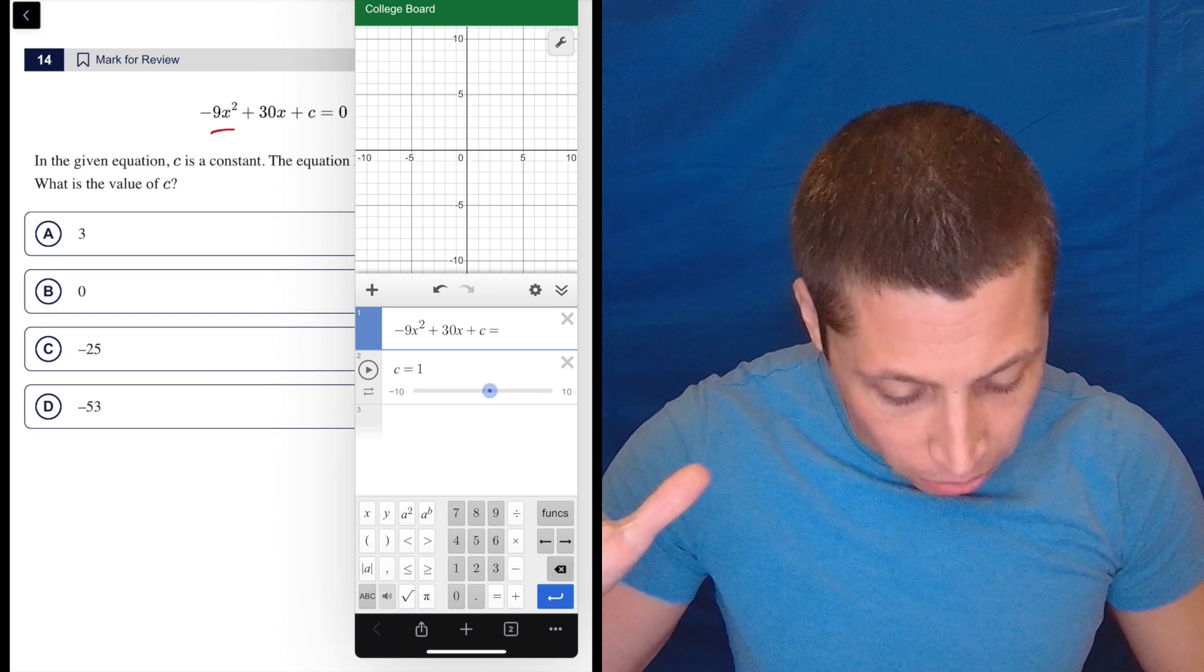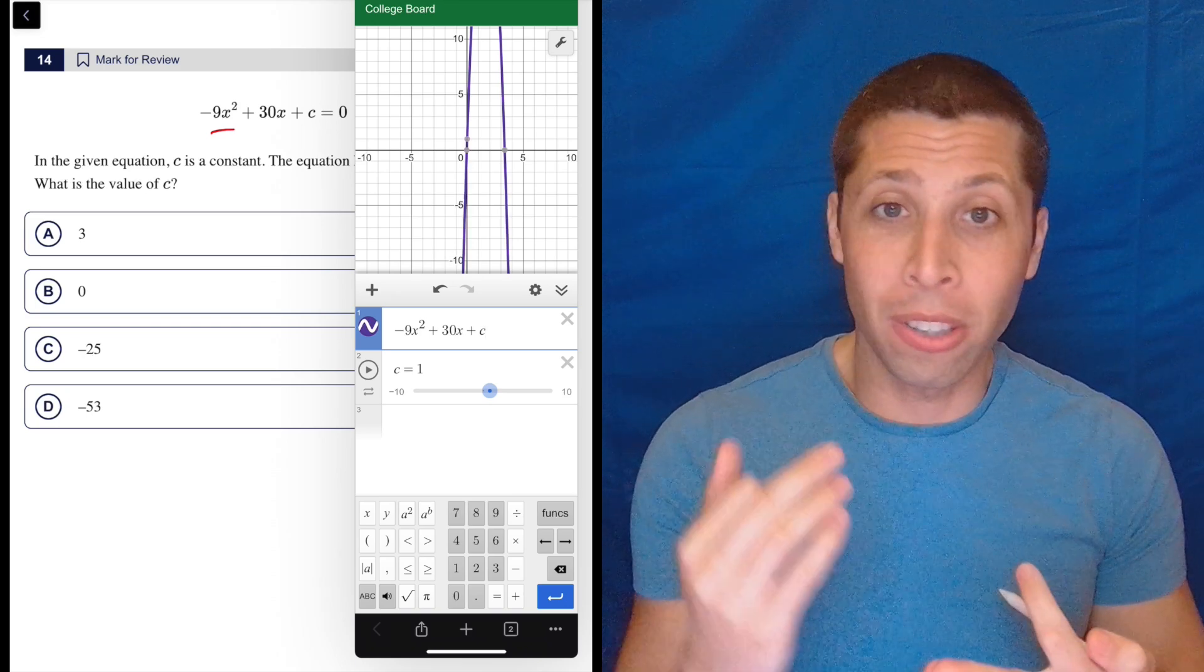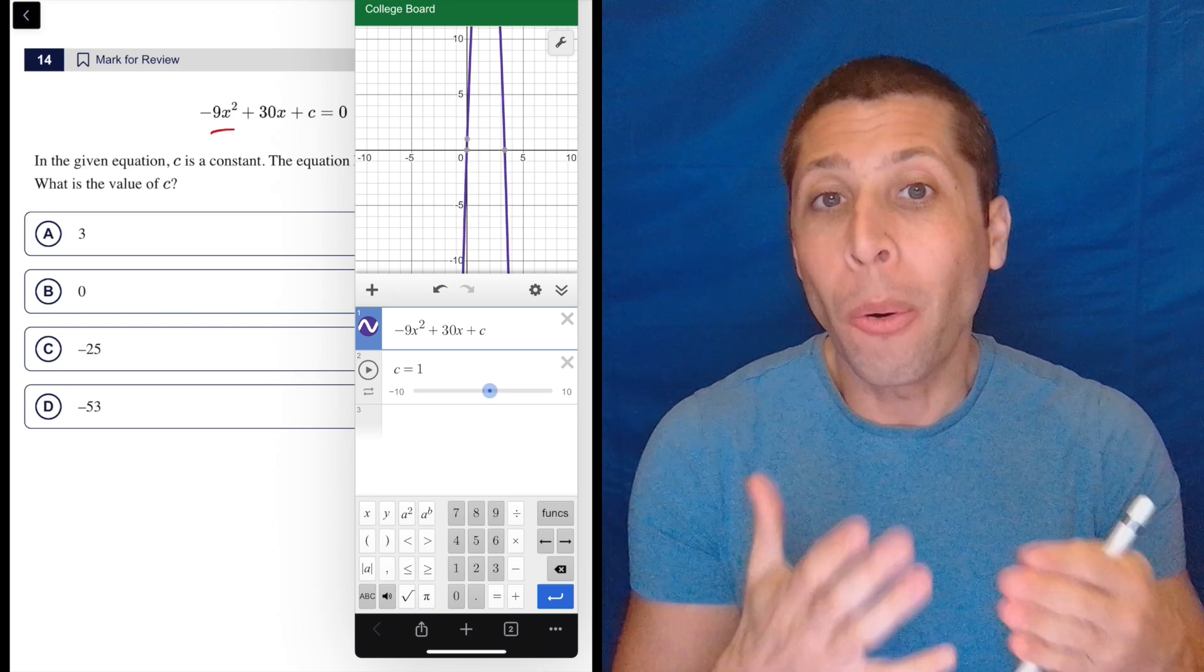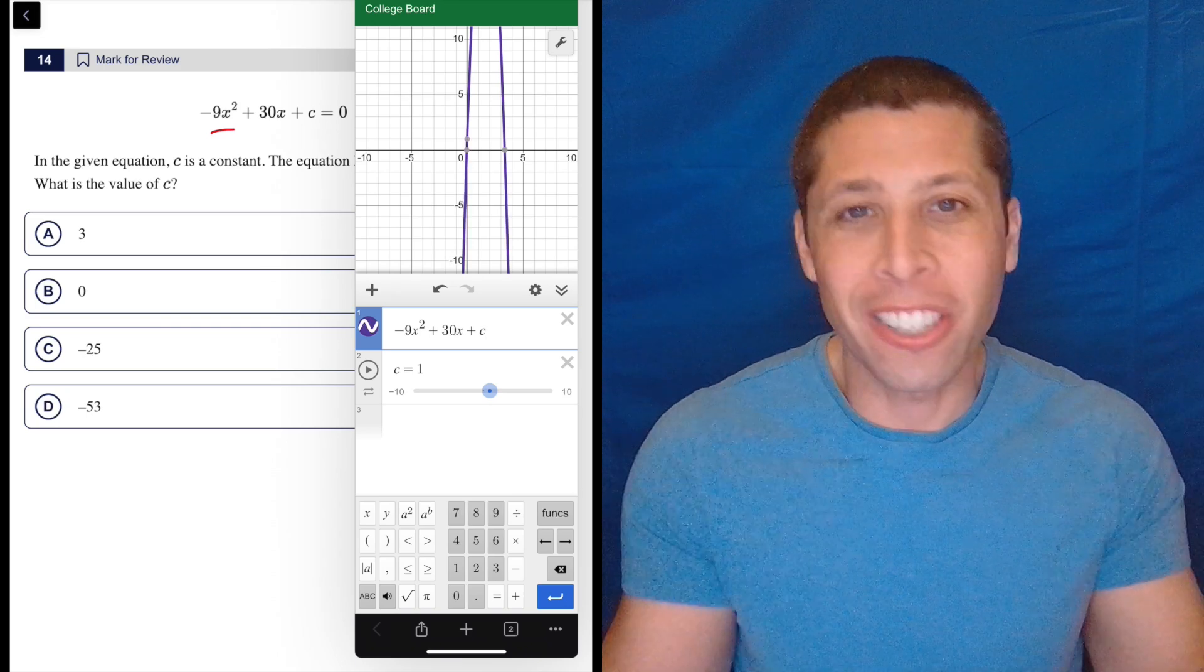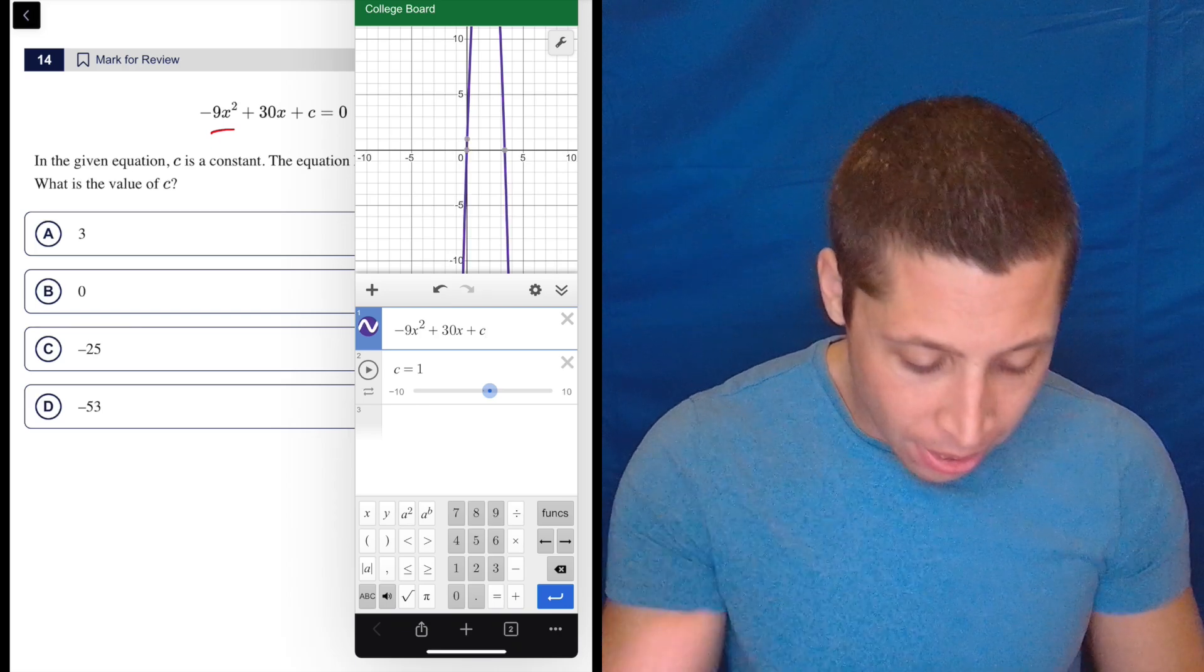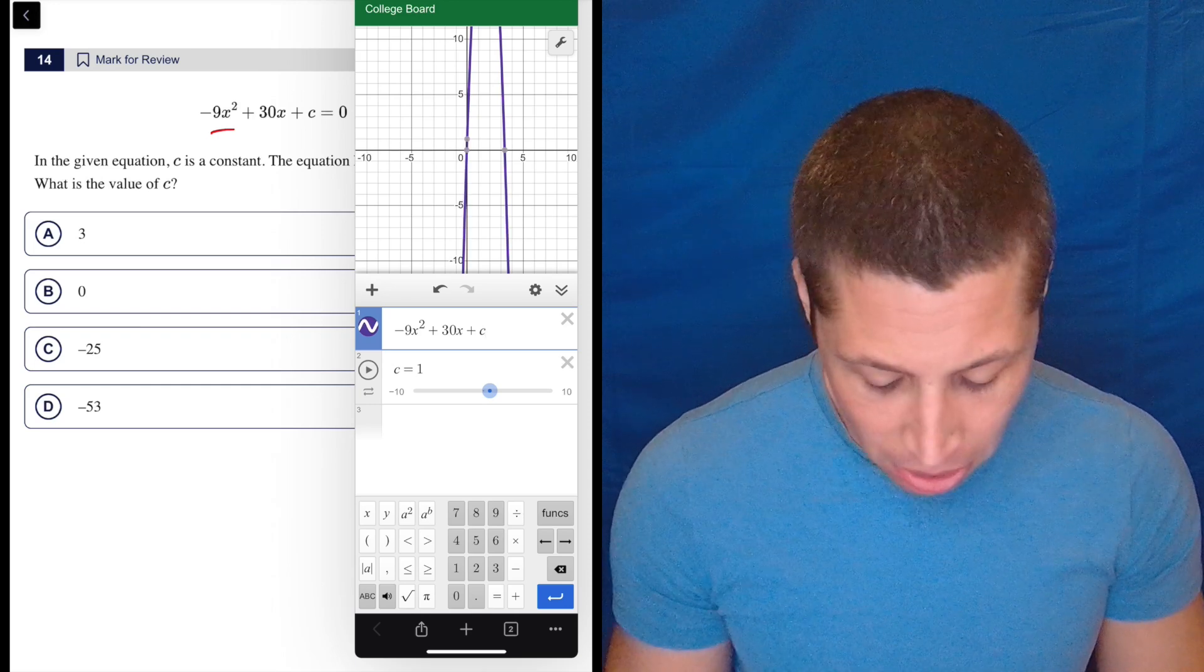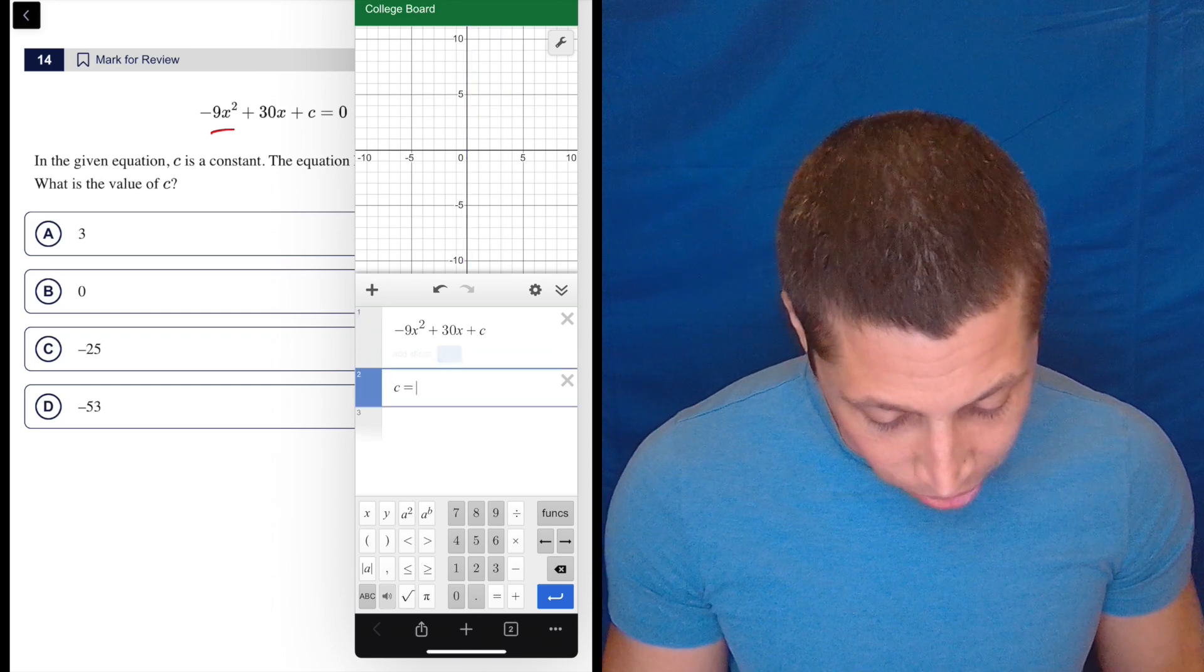Whereas if I get rid of the equal zero, I see the whole parabola. So whether there's one solution, two solutions, zero solutions, I'm going to see it because I can just see where those x-intercepts are regardless. So I want to see the whole thing. So I have a whole lesson on this, but basically I don't like the, I want to see the x-intercepts. But now we can just guess and check the answers.